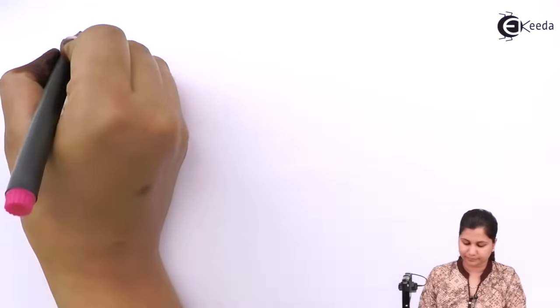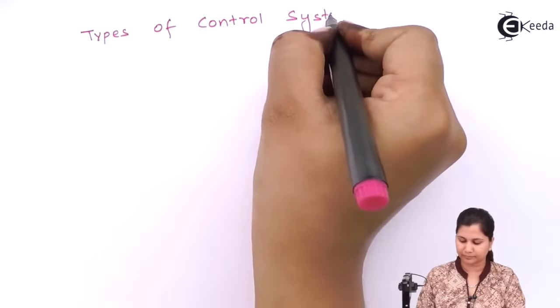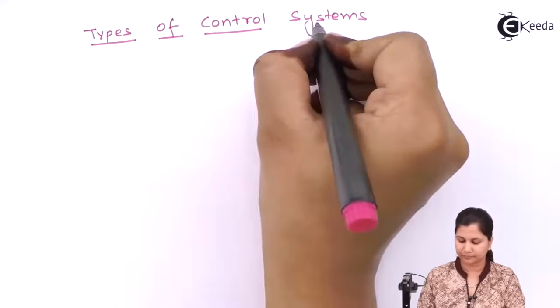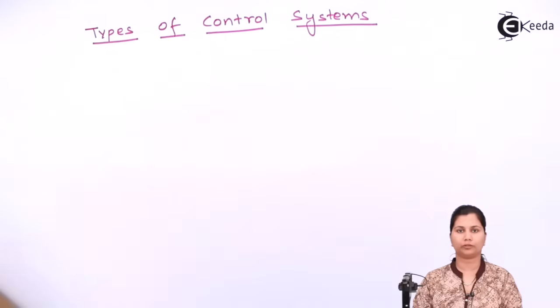This video is on the topic of open-loop and closed-loop systems. Hello friends, in this video we are going to study about the types of control systems. There are two types of control systems: open-loop control systems and closed-loop control systems.